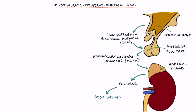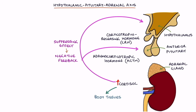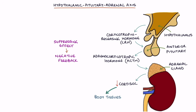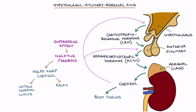Cortisol travels to the body tissues to carry out its effects. It also travels to the brain and has a suppressing effect on the hypothalamus and the pituitary — this is called negative feedback. Too much cortisol suppresses the release of CRH and ACTH, resulting in less cortisol release. When there's not enough cortisol, there's less negative feedback, which means the hypothalamus and pituitary release more CRH and more ACTH to stimulate the adrenal glands to release more cortisol. This helps to keep cortisol levels within normal limits and relatively stable over time.